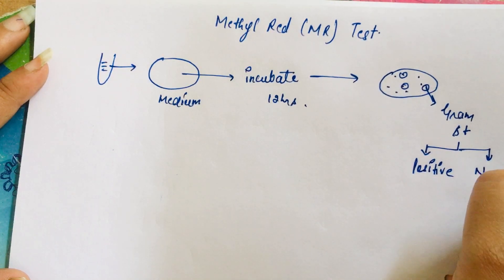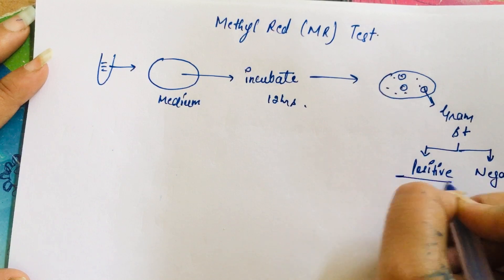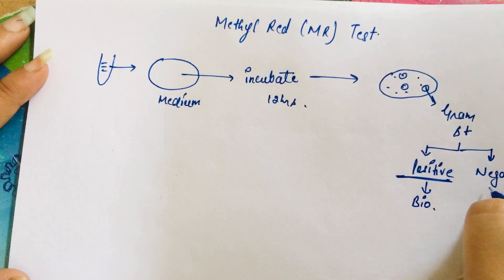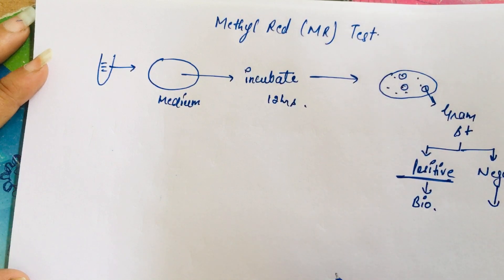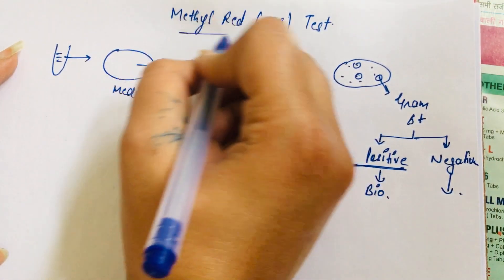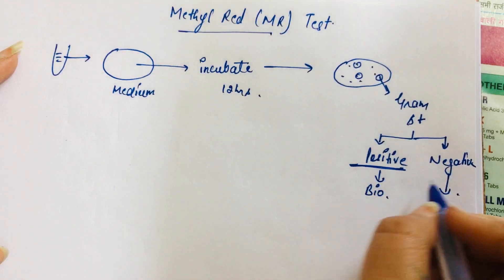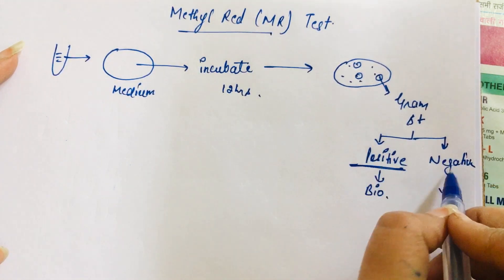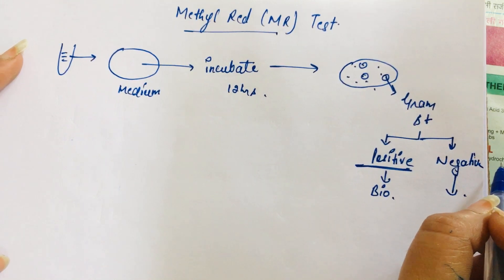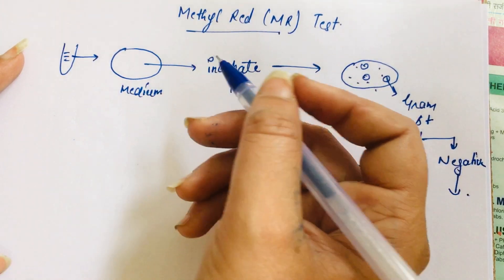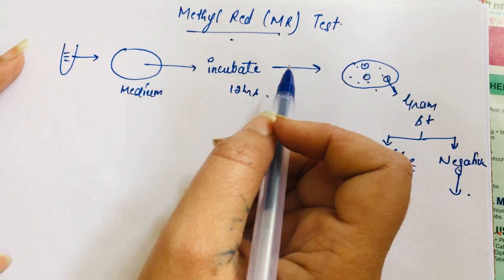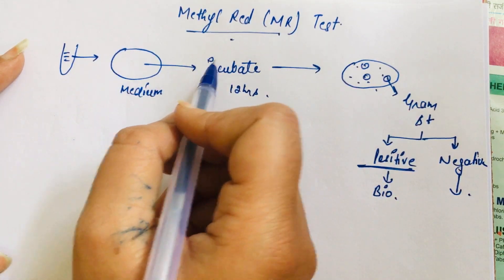We have already discussed gram positive biochemical reactions. Now we are discussing gram negative biochemical reactions, and in this context we will study the methyl red test. Once we know that our bacteria is gram negative, we perform different types of biochemical reactions such as methyl red, Voges-Proskauer, urea hydrolysis, and many more.